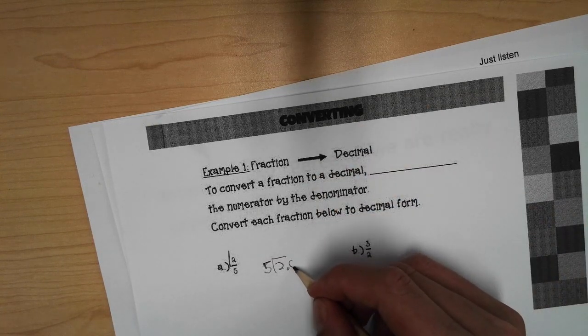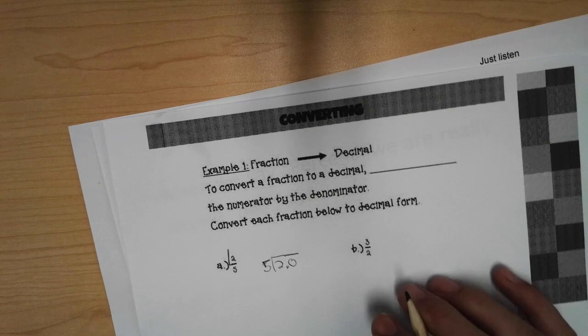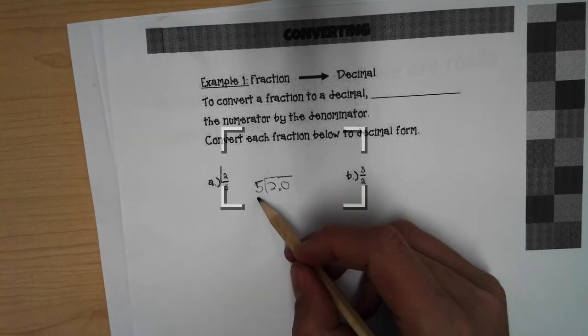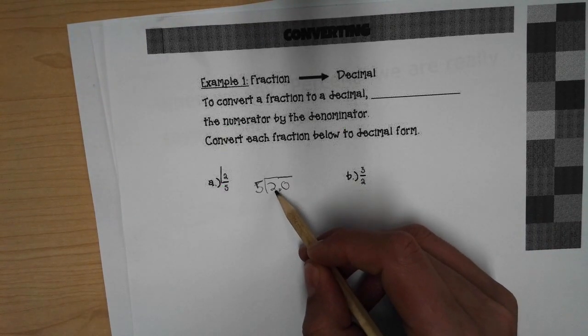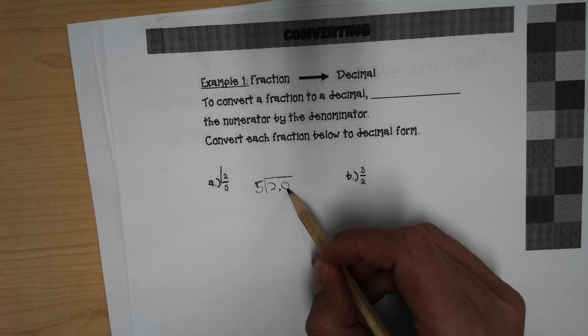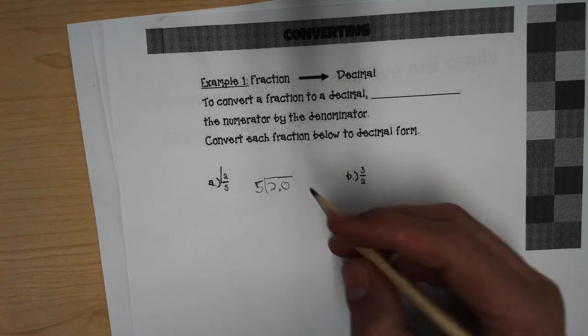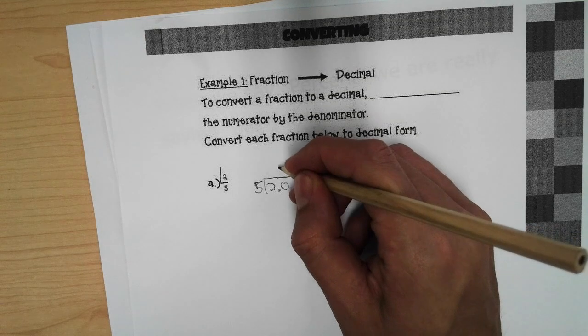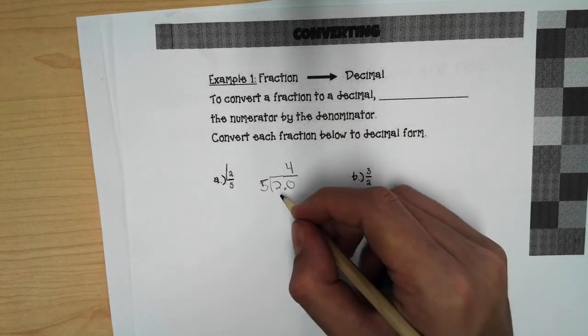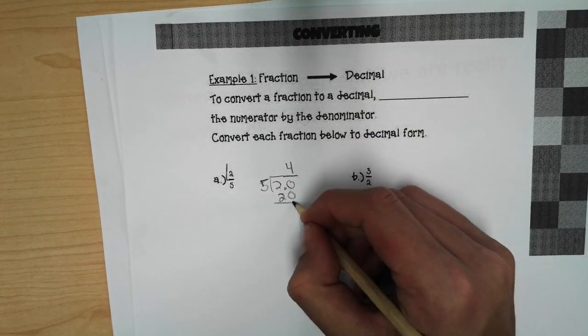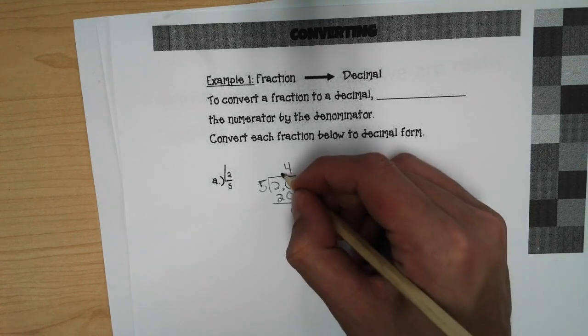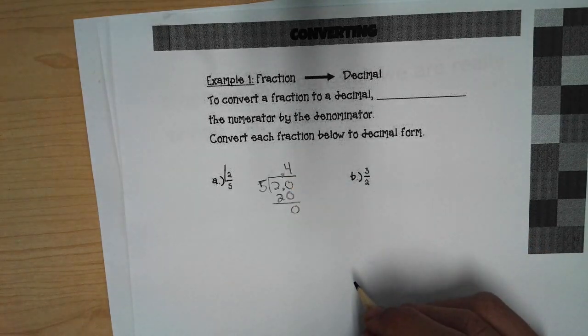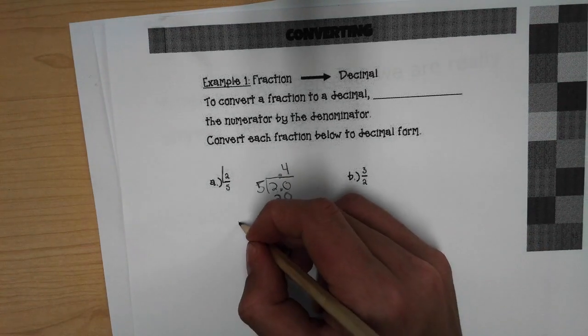You add a decimal and a zero. Now five can't go into two. So if I get stuck, I back up the truck and go here to zero. How many times does five go into 20? So now my answer is four tenths.